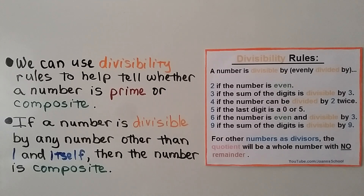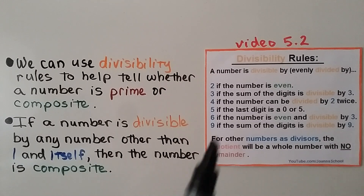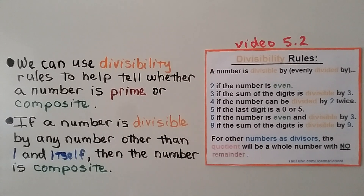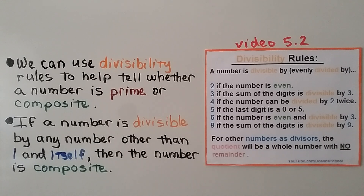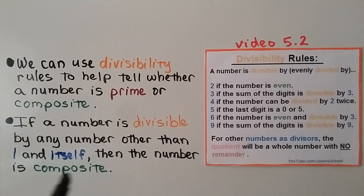We can use divisibility rules to help us tell whether a number is prime or composite. These were covered back in video 5.2 — there'll be a link in the description if you missed it. If a number is divisible by any other number than 1 and itself, then the number is composite.